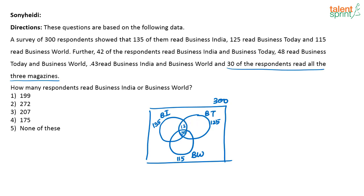12 plus 30 is 42 — correct. Now 48 read Business Today and Business World, so this full intersection is 48. Out of this 48, 30 are reading all three, so how many read only Business Today and Business World? That is 18. Similarly, this full section for Business India and Business World is 43. Out of which 30 read all three, so how many read only Business India and Business World? That is 13.